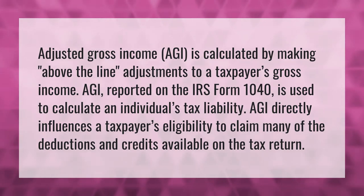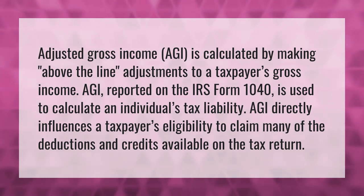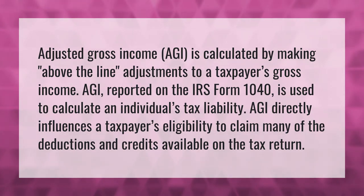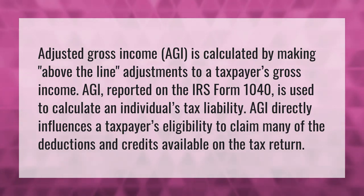Adjusted Gross Income, AGI, is calculated by making above-the-line adjustments to a taxpayer's gross income. AGI, reported on the IRS Form 1040, is used to calculate an individual's tax liability.